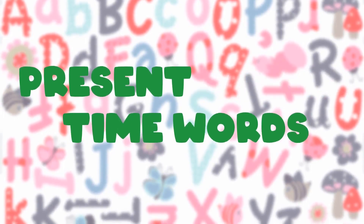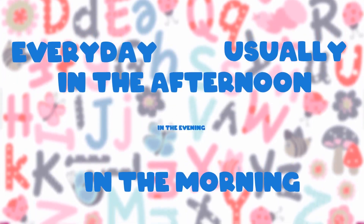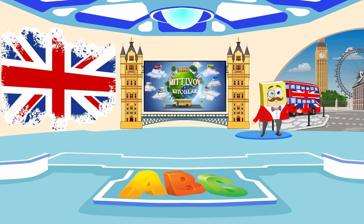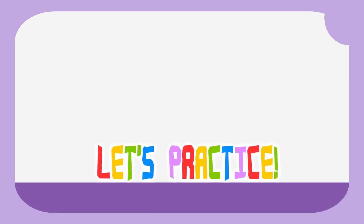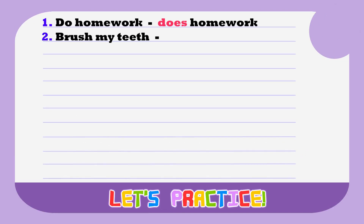When we speak in the present simple tense, we often use the words: every day, usually, in the morning, in the afternoon, in the evening. My dear students, let's practice. Write the third form of the following verbs. One, do homework — does homework. Two, brush my teeth — brushes her or his teeth.